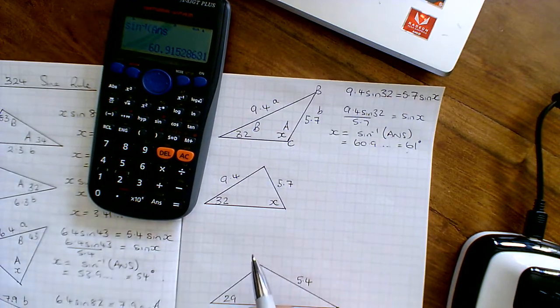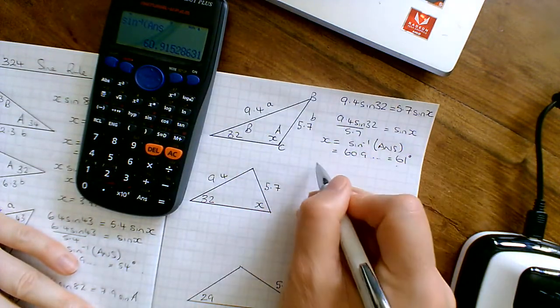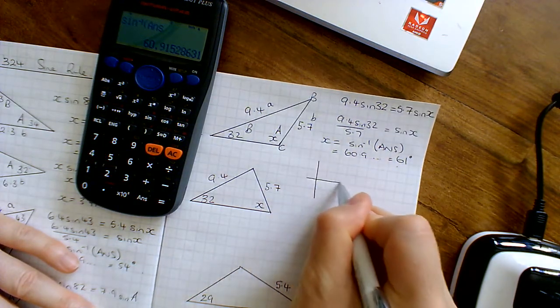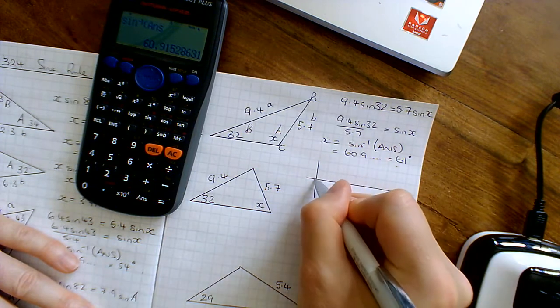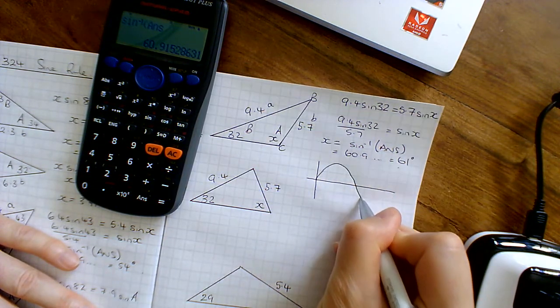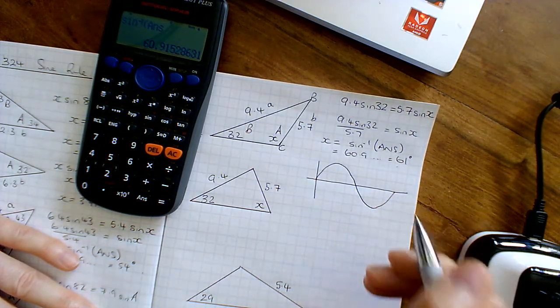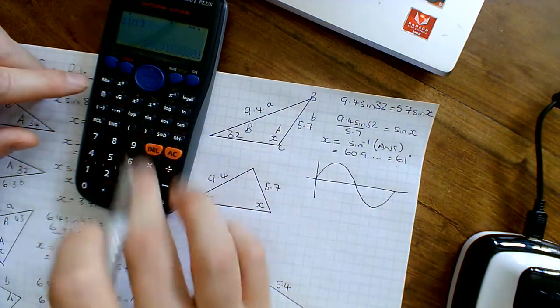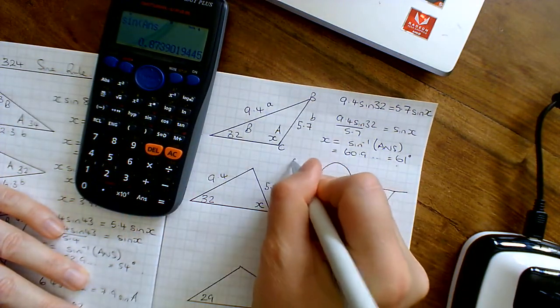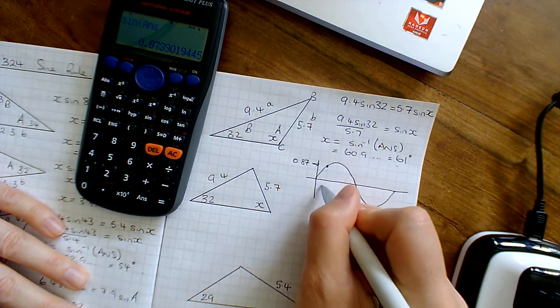The thing about when you press the sine minus 1 button, it gets you an answer, but there's actually an infinite number of answers. If you've ever looked at the sine curve, the sine curve looks something like this thing. It goes up to 1 and then it comes back down to 180, then it comes down here and comes back up, and it just runs off forever. That's a sine curve.